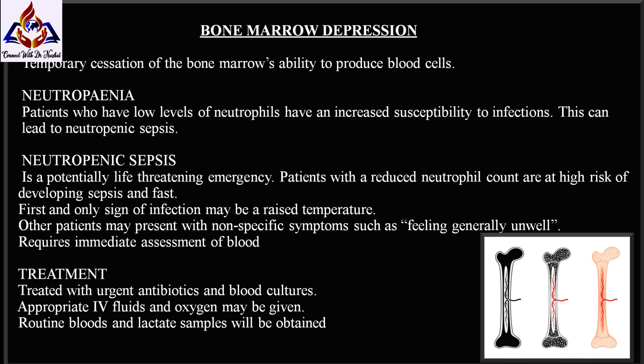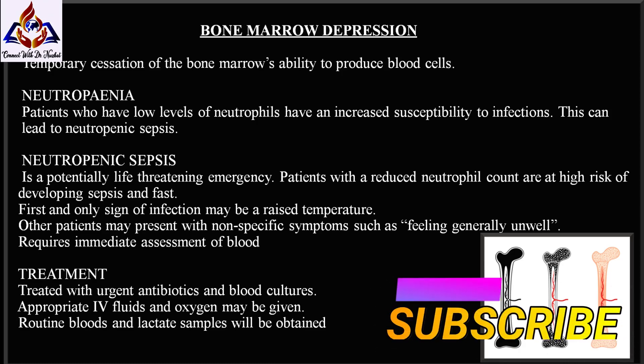Neutropenic sepsis is a potentially life-threatening emergency. Patients with a reduced neutrophil count are at high risk of developing sepsis, and if not treated immediately, it can become fatal within hours. The usual signs of infection may be absent as the immune response is inhibited. In some cases, the first and only sign may be a raised temperature; others may present with non-specific symptoms such as feeling generally unwell.